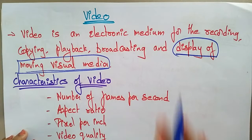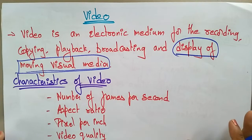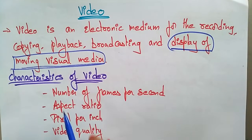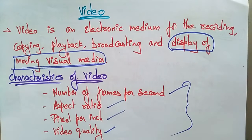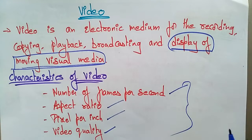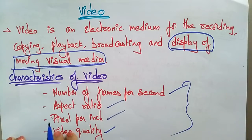Video is an electronic medium used for recording, copying, playback, broadcasting, and display of moving visual media. The characteristics of video are: number of frames per second, aspect ratio, pixels per inch, and video quality. While recording any video these characteristics have to be remembered. If your camera has high pixels it takes high quality, high definition; if it is low pixel it takes low quality and low definition.